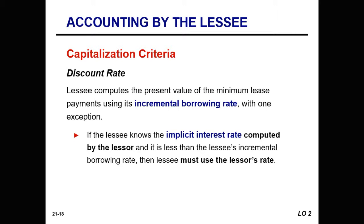Here comes the time value of money again. The incremental borrowing rate is defined as the rate that, at the inception of the lease, the lessee would have incurred to borrow the funds necessary to buy the leased asset. There is one exception: if the lessee knows the implicit rate computed by the lessor and that rate is less than the lessee's incremental borrowing rate, then the lessee must use this implicit rate.